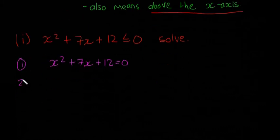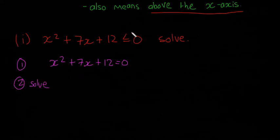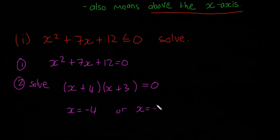Then step two is you solve this. So solve the normal quadratics, there's no inequality in it. So that's just going to be by factorizing it. So I'm going to go x and x is equal to zero. And in this case it's going to be 4 and 3 are going to be the two factors. So x plus 4 and x plus 3. So that means that x is going to be equal to minus 4 or x is equal to minus 3.